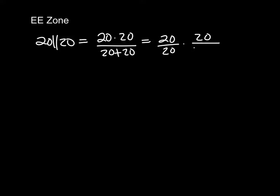So if I look at a 20 ohm resistor in parallel with another 20 ohm resistor, I know that this, mathematically, is 20 times 20 over 20 plus 20. I can pull 20 out, top and bottom, leave behind 20 and 1 plus 1, or 20 over 2.